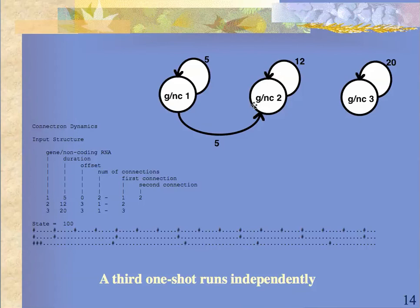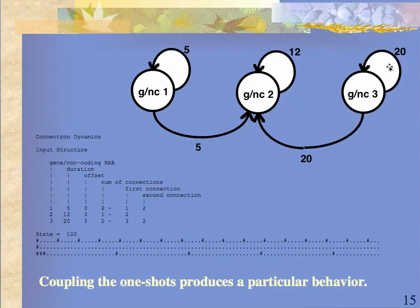If you have three different transcription sites and two of them are coupled and one is independent, then the third one is going to have a periodicity determined by this constant here. It's all just rules. If one sends to two and three sends to two, then two is going to be shut off all the time — based on what the rules are saying, and the rules represent what the graphics show.